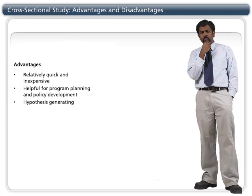However, with only a one-time assessment, you can't truly determine a cause-effect relationship. The temporal relationship between exposure and outcome is not established when they are measured at the same time. The cross-sectional design can only determine an association and therefore cannot predict risk of future events.